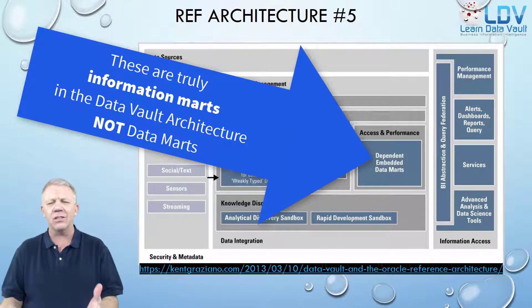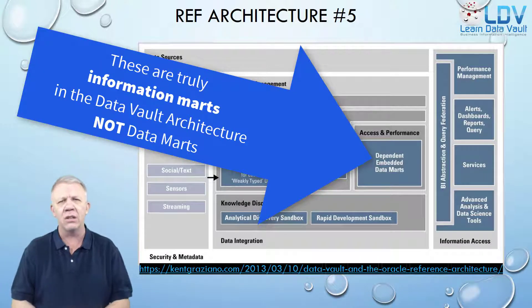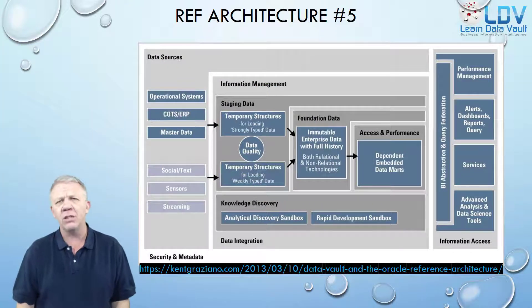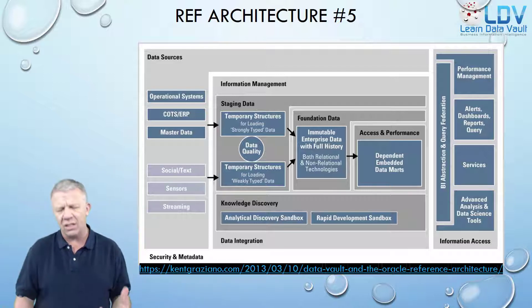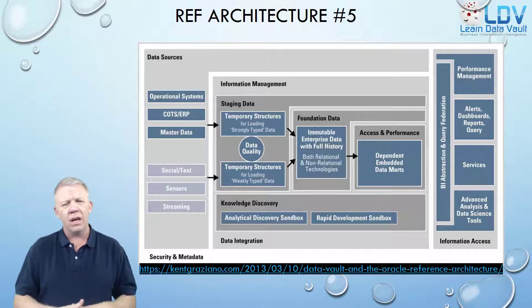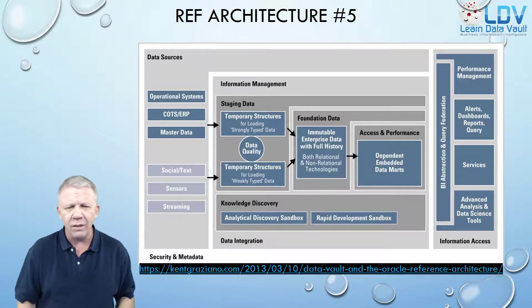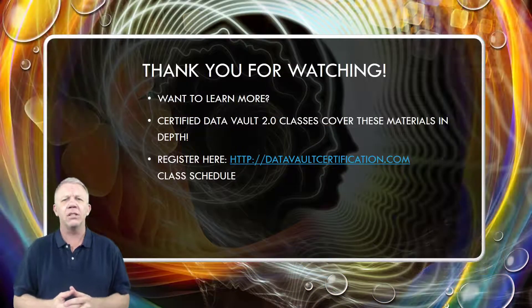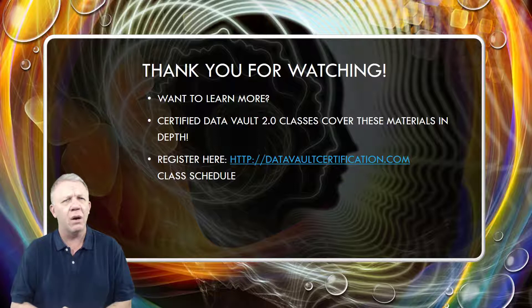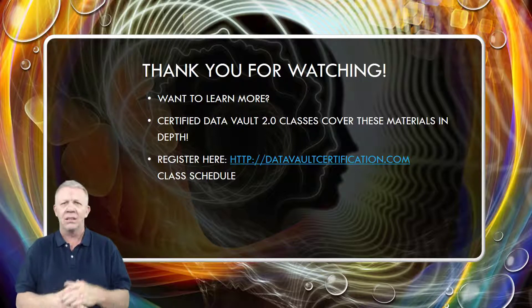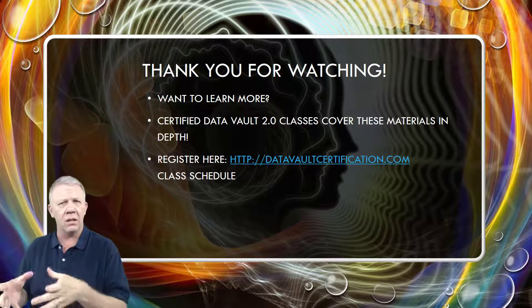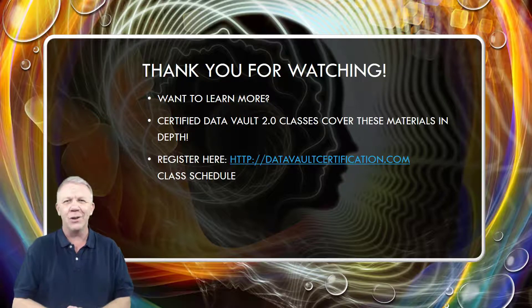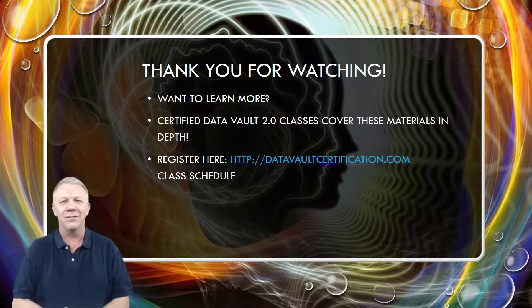And then, of course, access and performance, dependent embedded data marts — what does that mean? It means we've got information marts. We might be able to virtualize them, we might not. It all depends on how big the data sets are, what we're doing with them, and where we're going. Thanks for watching. I'll see you in the next video where we're going to talk about landing zones in detail and get into data vaults on data lakes. Join me in the next video — see you then.